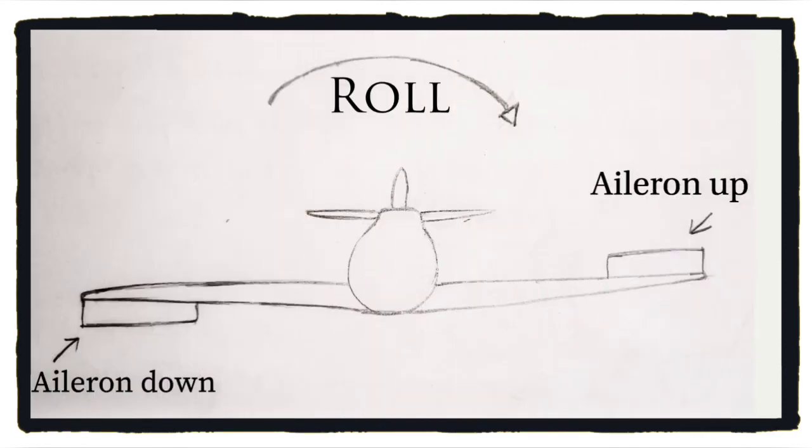For instance, when the aileron on the left is operated down, camber is increased and lift is produced. Meanwhile, on the other side where the aileron is operated up, the lift is decreased. This results in rolling of the aircraft towards the left.